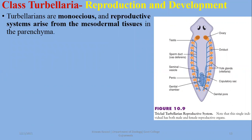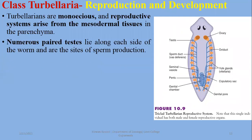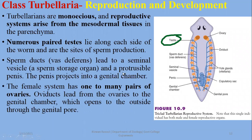As for sexual reproduction, turbellarians are hermaphroditic — you will find male and female sex organs in one individual — but they carry out cross-fertilization. Testes are numerous; these are the blue-colored structures seen in the diagram. They lie along each side of the worm. Sperm production occurs, and sperms travel to the seminal vesicle. A protrusible penis helps sperm transfer during copulation and cross-fertilization, and the penis projects into a genital chamber.